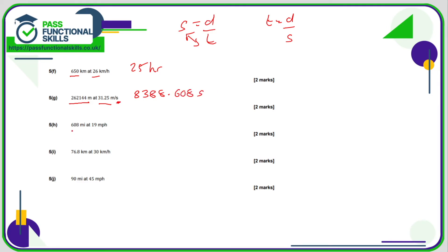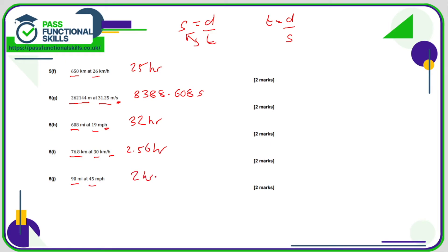For H: 608 divided by 19 is 32, and the time is hours. For I: 76.8 divided by 30 is 2.56 hours. And the final question: 90 divided by 45 is 2, and again that is hours.